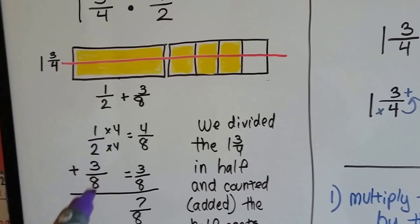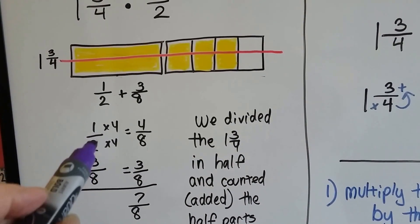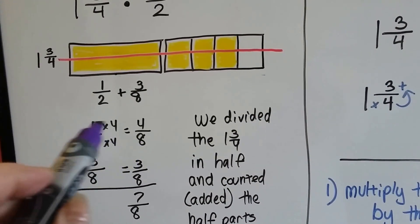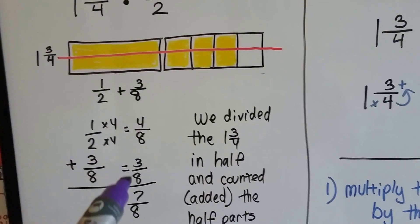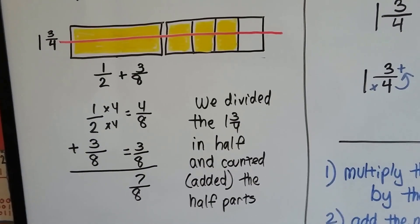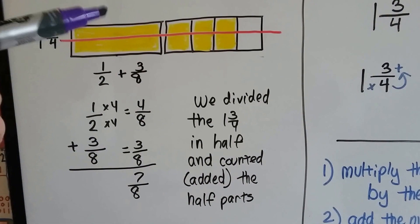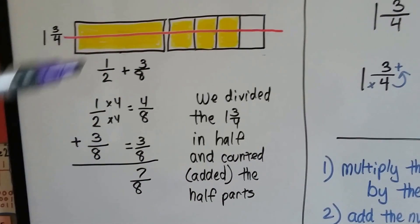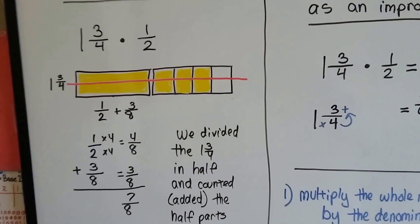We get a common denominator. They can meet at eighths house. 2 times 4 is 8 and 1 times 4 is 8. So we add 4 eighths and 3 eighths and get 7 eighths. We divided the 1 and 3 fourths in half and counted, added, the half parts. That's how we can do it using a model.